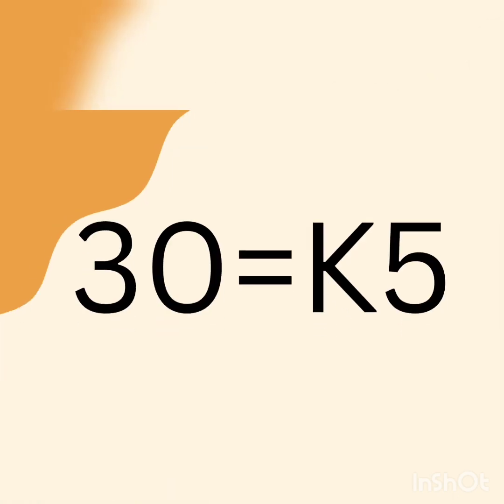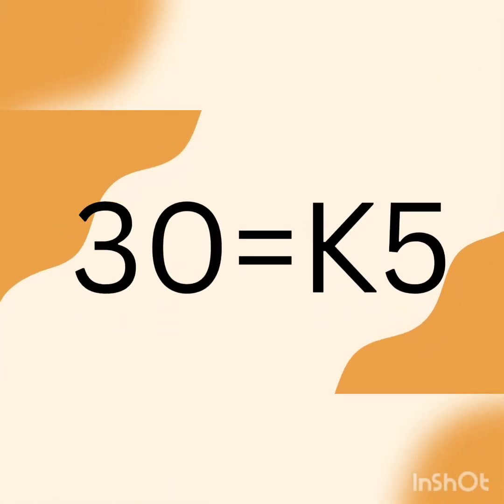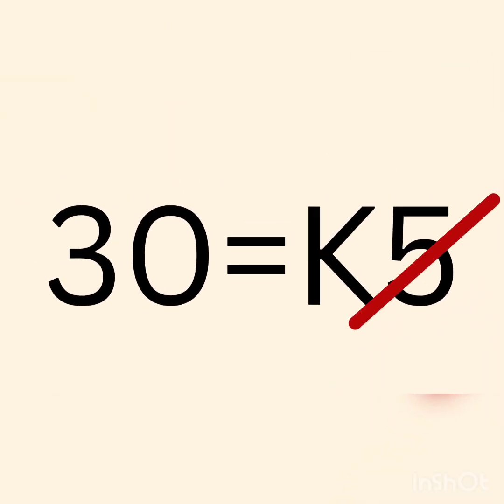Therefore, the answer will be 30 equals k5. To let k stand alone, you'll have to cancel out 5. But the question is, how do you cancel out 5?